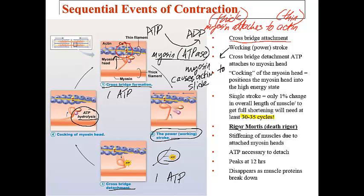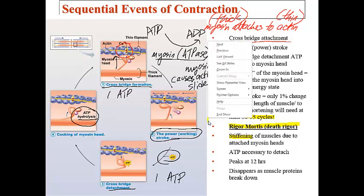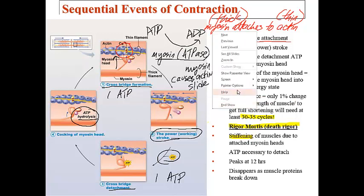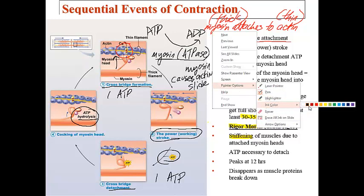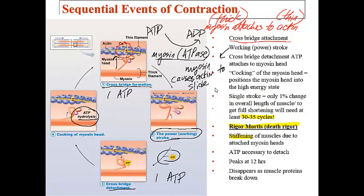A good example of what happens when ATP is absent is rigor mortis, which occurs after death. Muscles stiffen because there is no ATP available to detach the myosin heads. At the point of death, all calcium from the sarcoplasmic reticulum floods into the sarcoplasm, forming many crossbridges. Since there is no ATP for detachment, the muscle stays in a state of rigor until the muscle proteins eventually degrade.